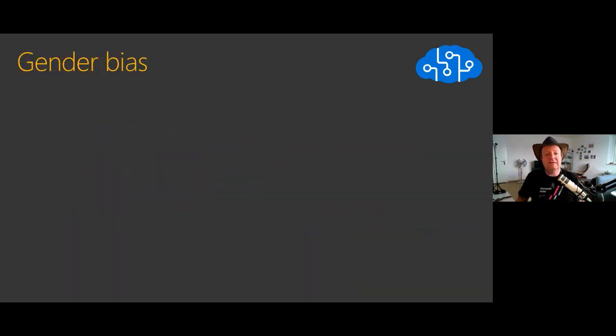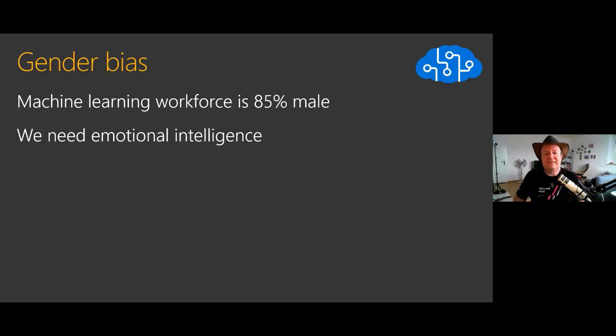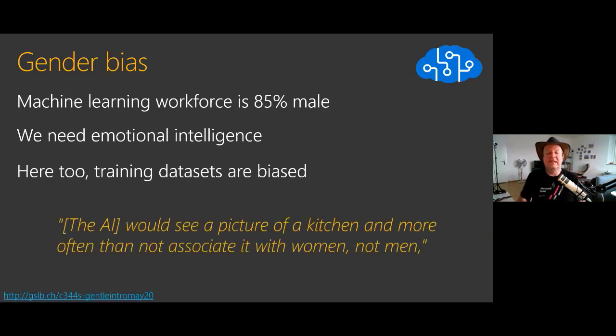There is also gender bias. The machine learning workforce is 85% male, and so they don't really test as a woman. We need probably more emotional intelligence here. The training data sets are biased, and those training data sets are very expensive to produce - gathering the data, cleaning the data is very expensive. So very often those biased data sets are reused. Here we have a bad example where the AI sees a picture of the kitchen and associates it with a woman more than with a man, which for me, I love to cook, I feel very hurt by this assertion.